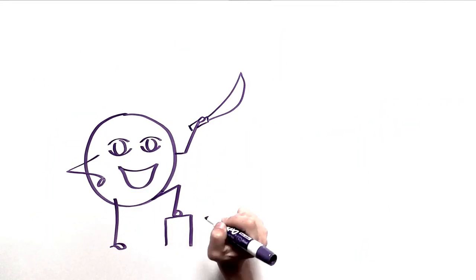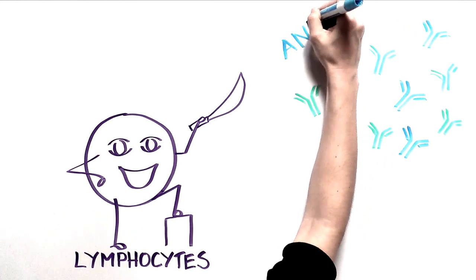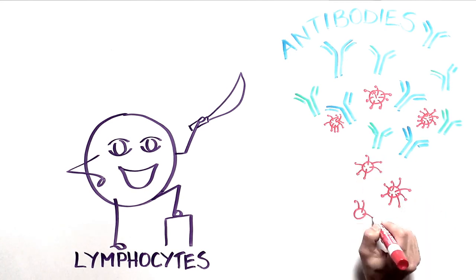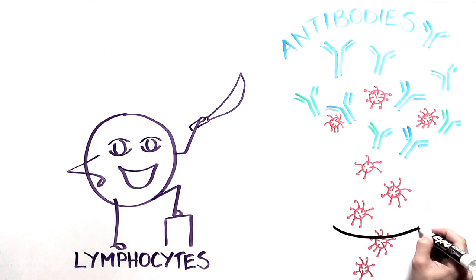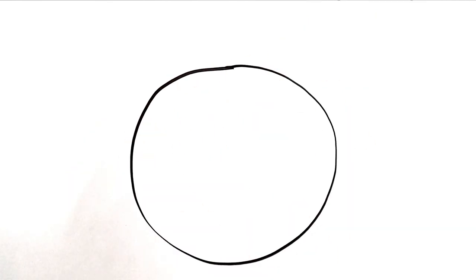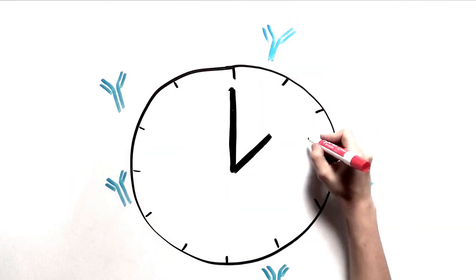Our white blood cells, also known as lymphocytes, are the heroic warriors that terminate deadly pathogens. Using their power, they battle the pathogens and produce antibodies that help them identify and eliminate foreign material. But sometimes it can take a long time for our immune system to finally clear our bodies of foreign invaders.